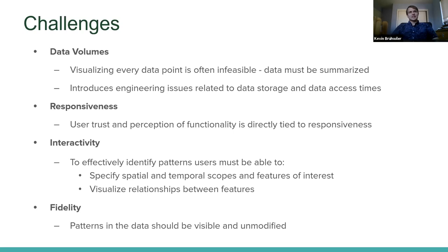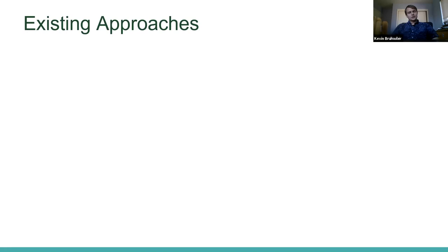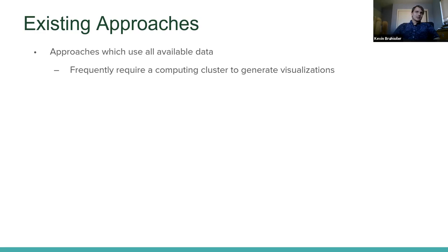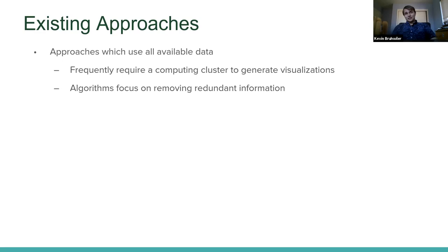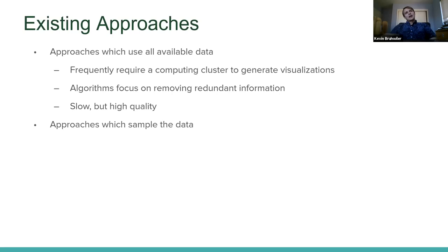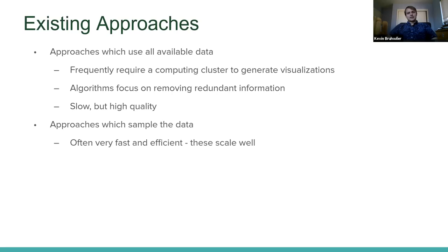Existing approaches for remote data visualization fall into two categories. The first uses all available data, typically requiring a computing cluster, supercomputer, or very long processing time. These algorithms focus on removing redundant information so the user can make sense of the data — they tend to be slow but produce very high-quality output, suitable for precise images in a paper. The second approach samples the dataset, which is often very fast and efficient. Nearly every remote data visualization application uses some form of sampling, and these scale well, allowing multiple users to be served simultaneously — Google Maps and Google Traffic use methods like this.